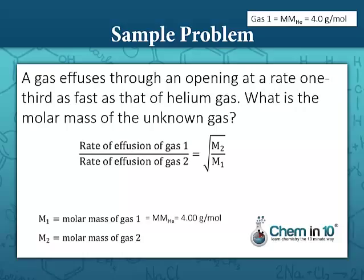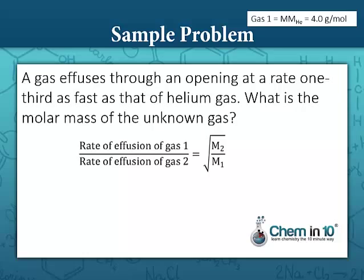Setting up our problem: if the rate of effusion of gas one, helium, is X, we know that our unknown gas has a rate of one-third of X — it's one-third as fast as X. So the rate of effusion of helium is X, and the rate of effusion of gas two is one-third of X.